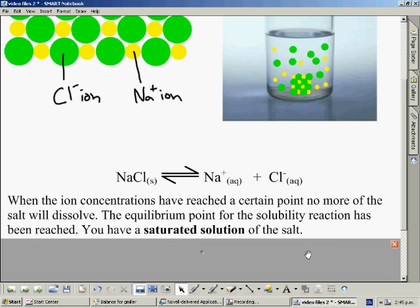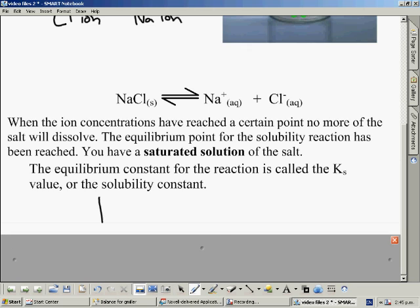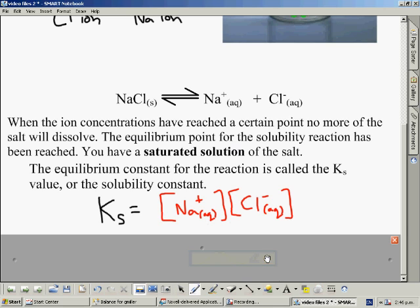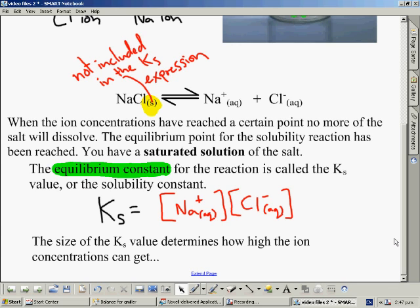Once we are at this equilibrium point we have what is called a saturated solution of the salt. Because this is an equilibrium reaction we can write an equilibrium expression for it. We call this the Ks expression because it involves solubility. It will still be products over reactants. In this case the products are the two ions and the reactant is solid sodium chloride. However we never include solids inside equilibrium expressions. So in the Ks expression there is actually no reactants appearing at all. However the Ks value is an equilibrium constant. So it tells us what limits there are on the sodium and chloride ion concentrations when the reaction is at equilibrium.